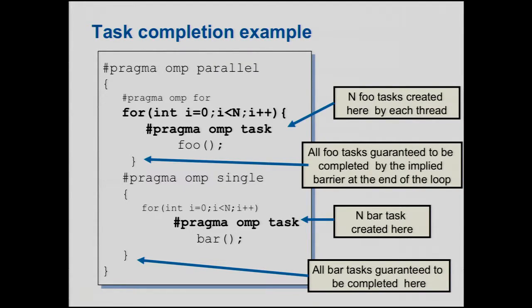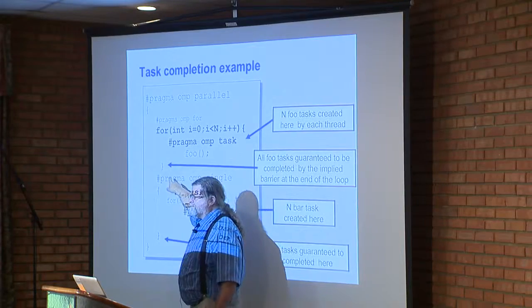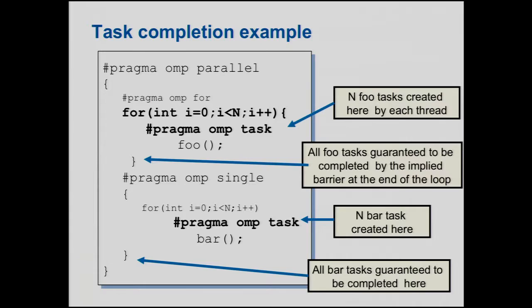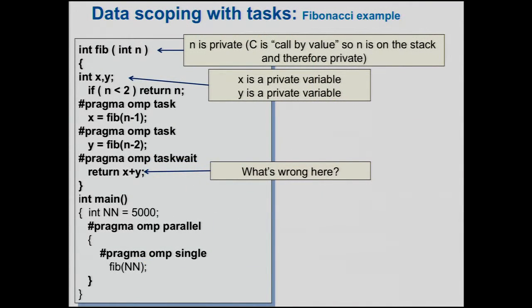Here's another example: pragma OMP parallel creates a team of threads, pragma OMP for with pragma OMP task inside calls function foo — this creates a whole bunch of tasks inside a for loop. All those tasks are guaranteed to complete by the implied barrier at the end of the for loop. In another pattern using single: only one thread creates the tasks, and they're all guaranteed to complete at the implied barrier at the end of the single.